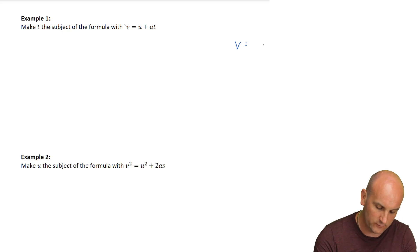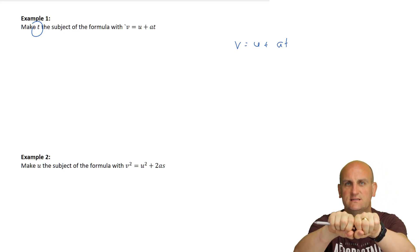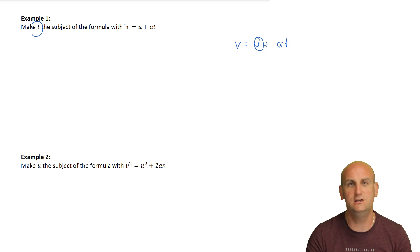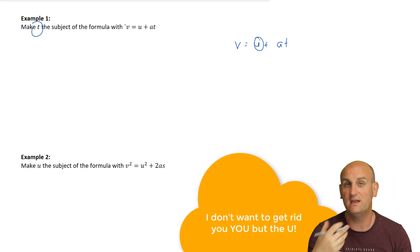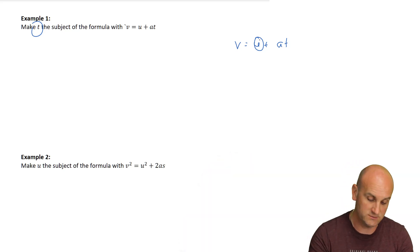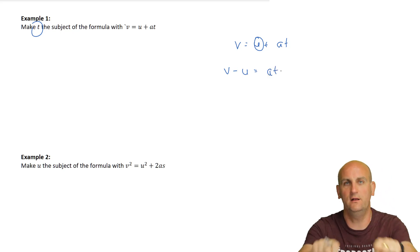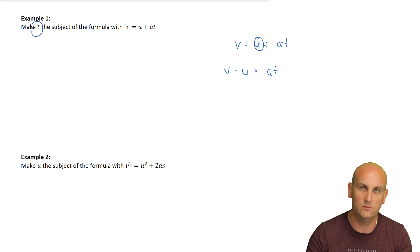So we have V equals U plus AT and it says make T the subject of the formula. So first things first, anything that's stuck to T, I'm going to leave. I'm going to get rid of this U. How to get rid of a U? I'm going to take away U from both sides. So like a number, if that was a 2, I would subtract 2. Now I'm just going to take away U from both sides. So V minus U is equal to AT. Done everything else I can now. The only thing that's left is what I call the kissing couple and they're kissing because there's a times in between them. How do I want to get rid of that A? Well, it's a times by A so I'm going to divide both sides by A. So I get V minus U all divided by A is equal to T.